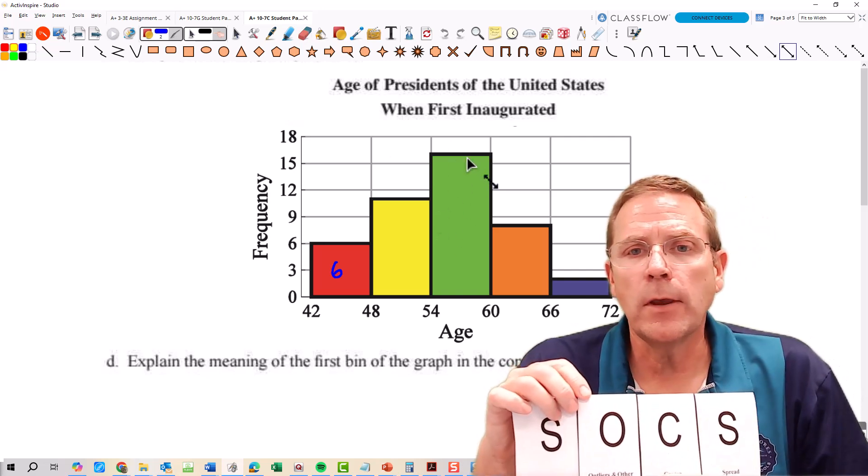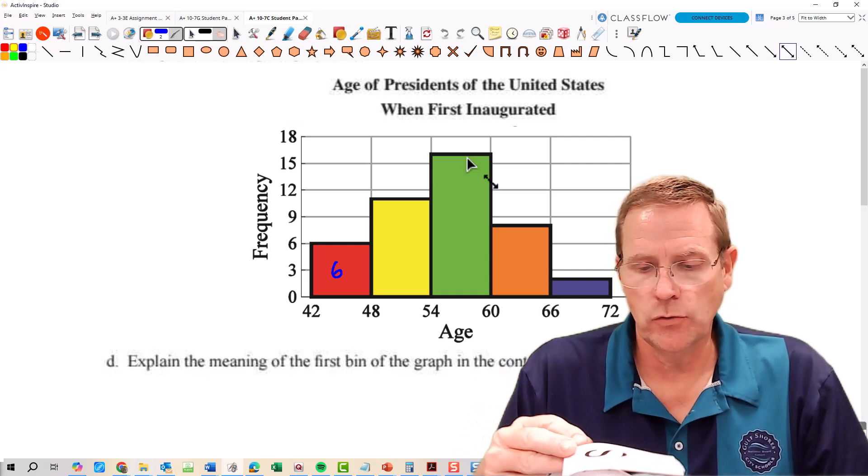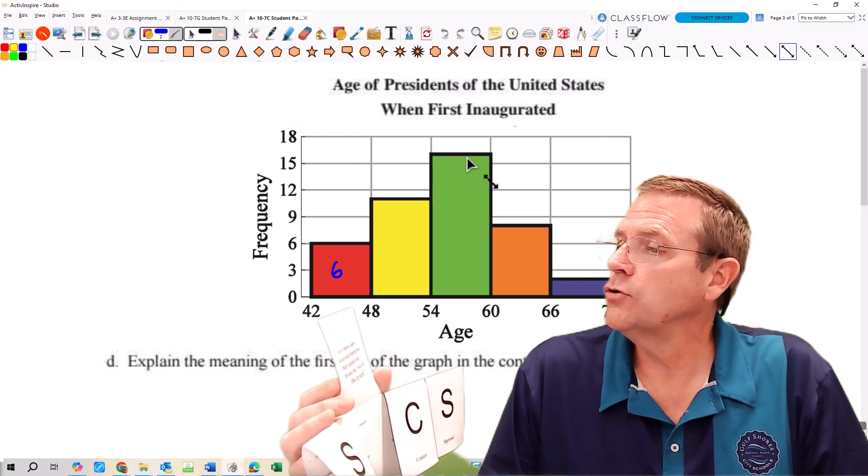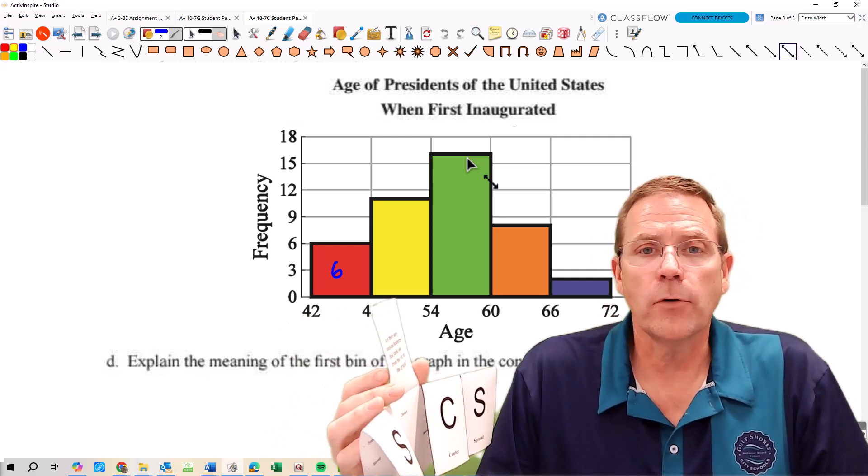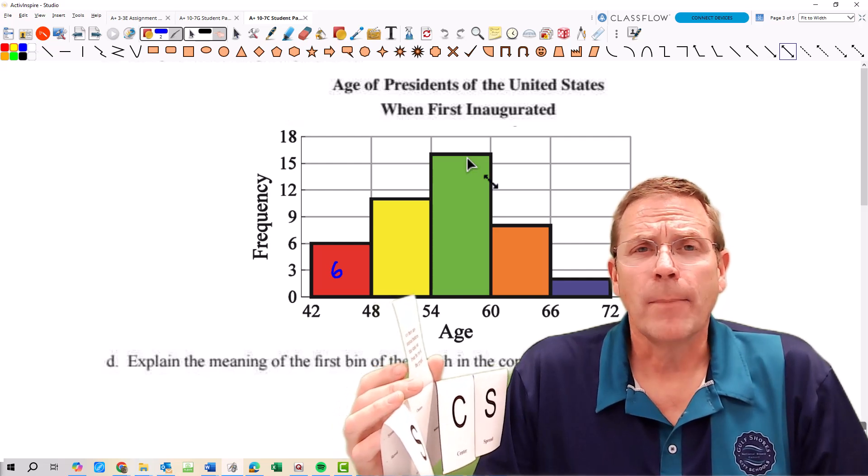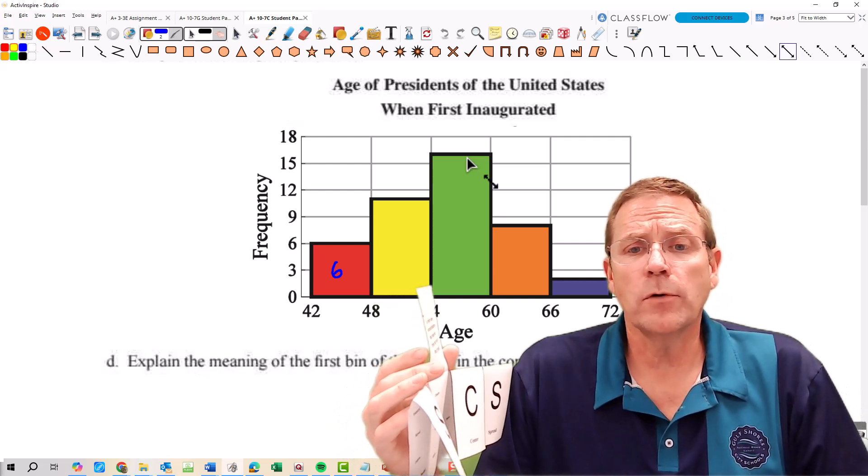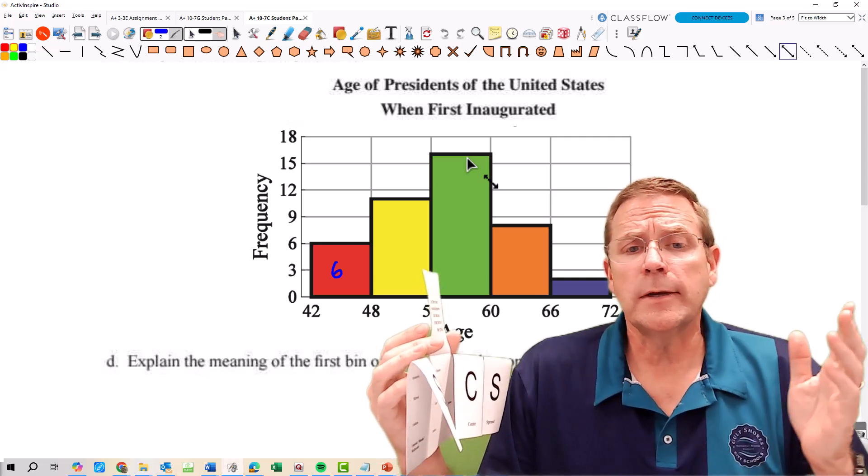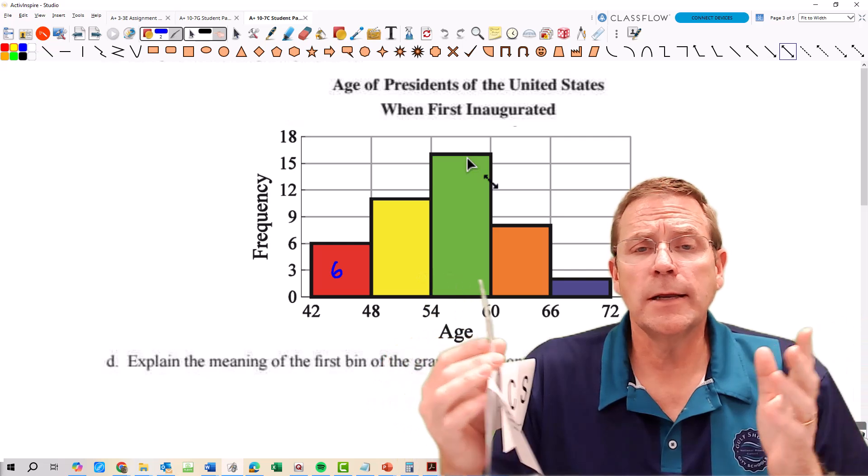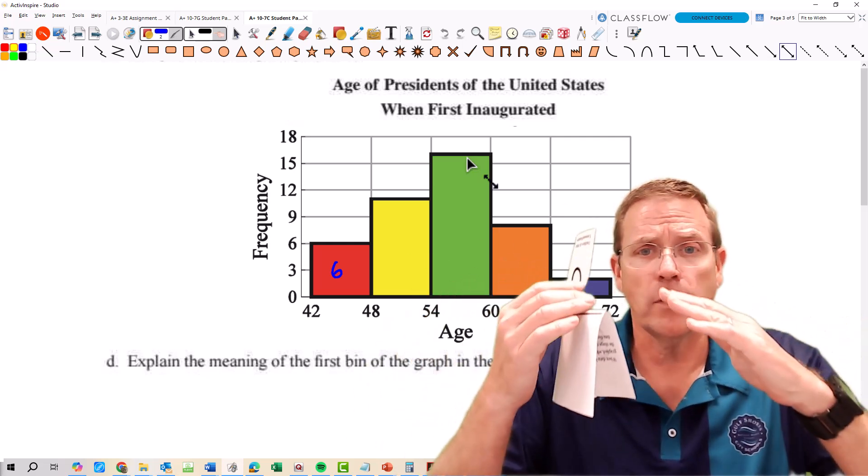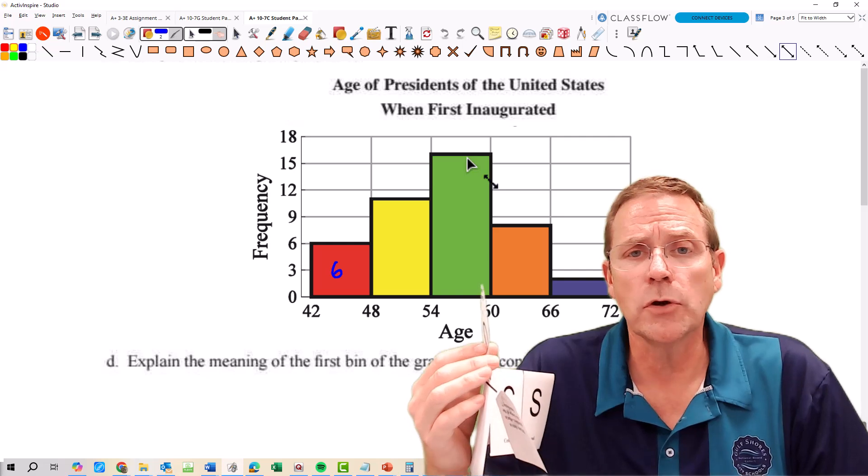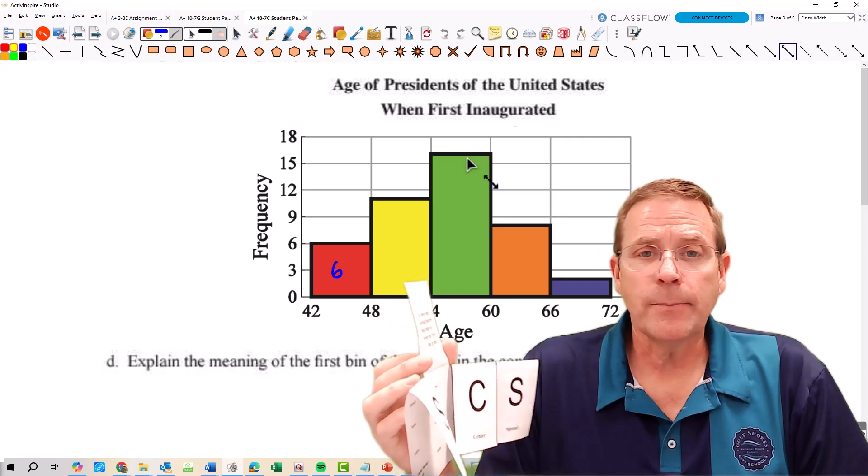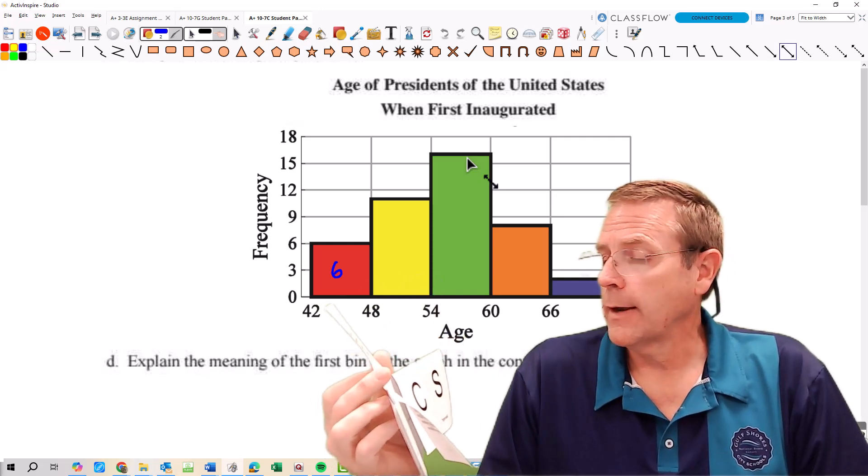Next we're going to look at the O which is for outliers and other unusual features. It asks what are the unusual features that stand out from the rest of the graph? First we're going to look at clusters, and my cluster is going to be that 54 to 60 where the majority of the data is. You could even argue that the majority of data is between the 48 and the 66. There's a perfect little bell curve almost. Gaps? There are no gaps. And then outliers? There's not any outliers here either.